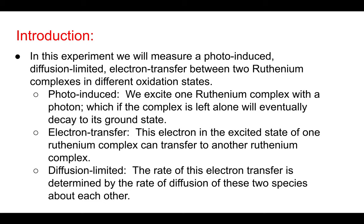Now let's say we have the acceptor present. Again, we hit the donor with a photon. We have this excited state electron — there's a spin relaxation — and now this excited state electron is in this excited state for a long time. If the acceptor diffuses within some proximity of the donor, the excited state electron can hop from the donor to the acceptor. If this happens, the electron will decay non-radiatively in the acceptor, and light will not be emitted. So the greater the concentration of the acceptor, the less fluorescence we see. We call the acceptor a quencher because it's going to quench the fluorescence.